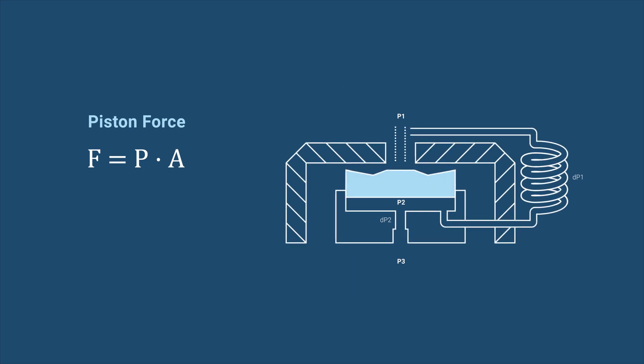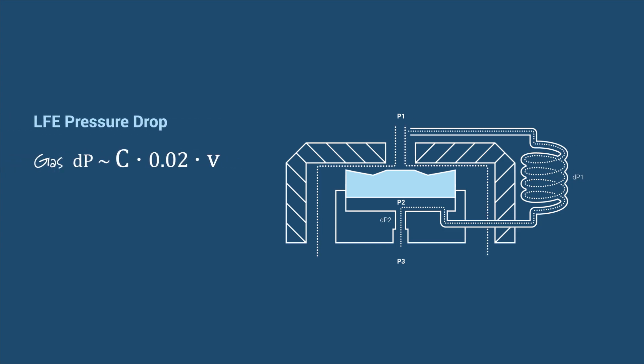When gas flows through the valve, which is a fluid with a viscosity of 0.02 cp, the pressure drop in the LFE will be minimal. This results in an even higher P2 pressure than for water. As P2 is exposed to the larger area, A2,